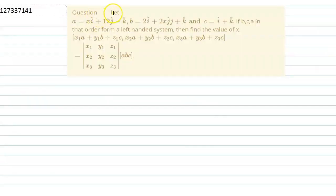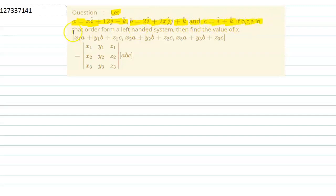Hello students, in this question, let a = xi + 2j − k̂, b = 2i + 2j + k̂, and c = î + k̂. If b, c, a in that order form a left-hand system, then find the value of x.